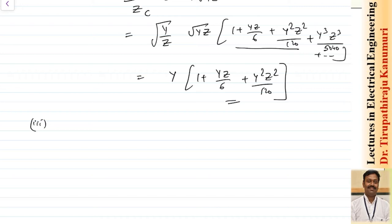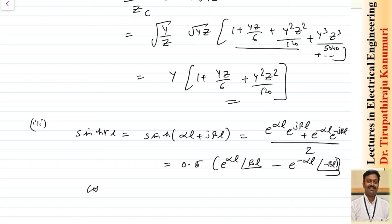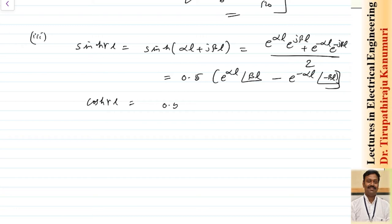There is also a third method where sinh(γl) = sinh(αl + j·βl) is expressed as 0.5·[e^(αl)∠βl − e^(−αl)∠−βl], and cosh(γl) = 0.5·[e^(αl)∠βl + e^(−αl)∠−βl]. However, calculation using this form is also very tedious, so generally we go with the second method — the Maclaurin series expansion — for solving numericals.